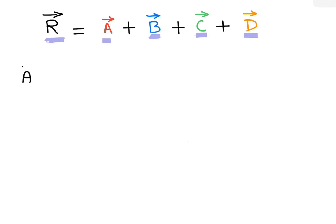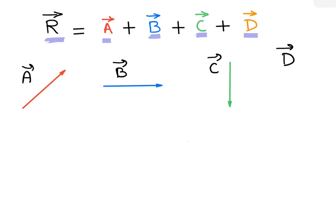Let's define the vectors first. Let's say we have four vectors: vector a, vector b, vector c, and vector d. We will be adding them to find the resultant vector r.